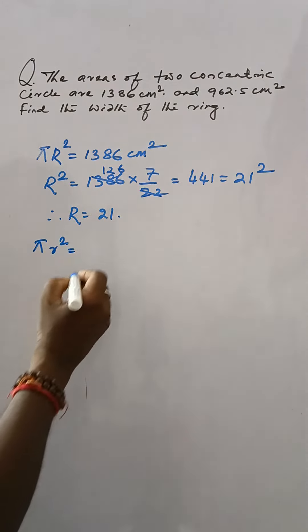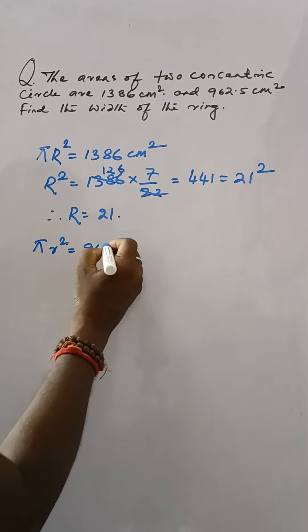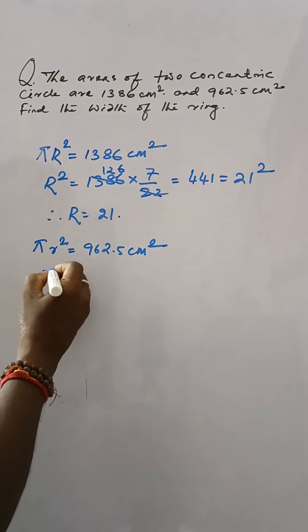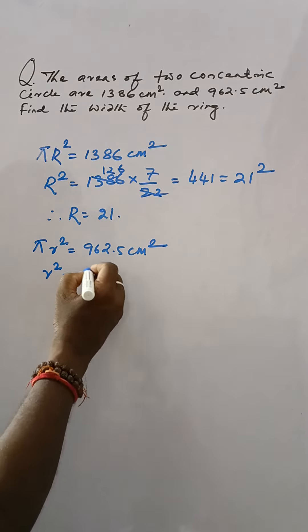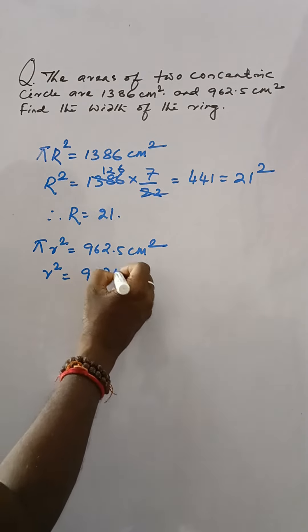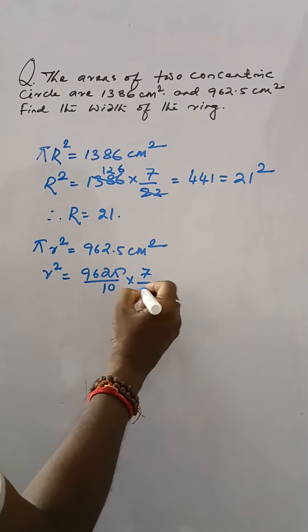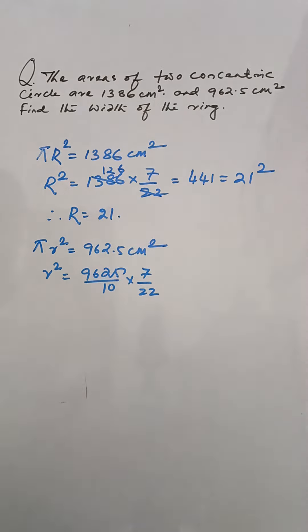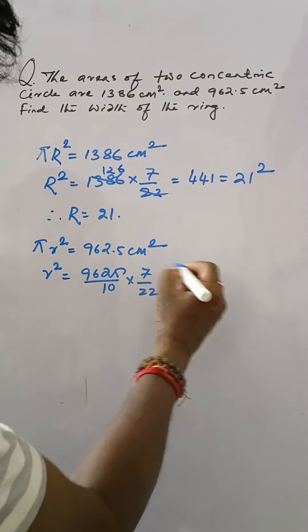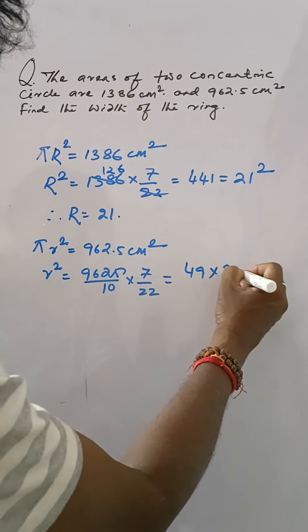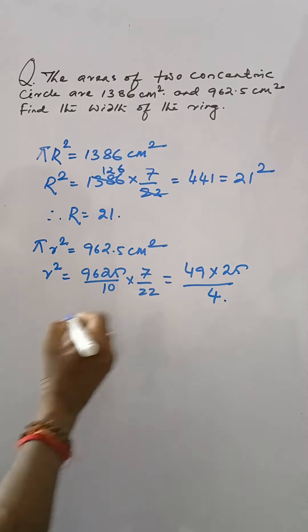pi r² is equal to 962.5 cm². Then r² is equal to 9625 by 10 into 7 by 22. Then this is 49 into 25 by 4. So,